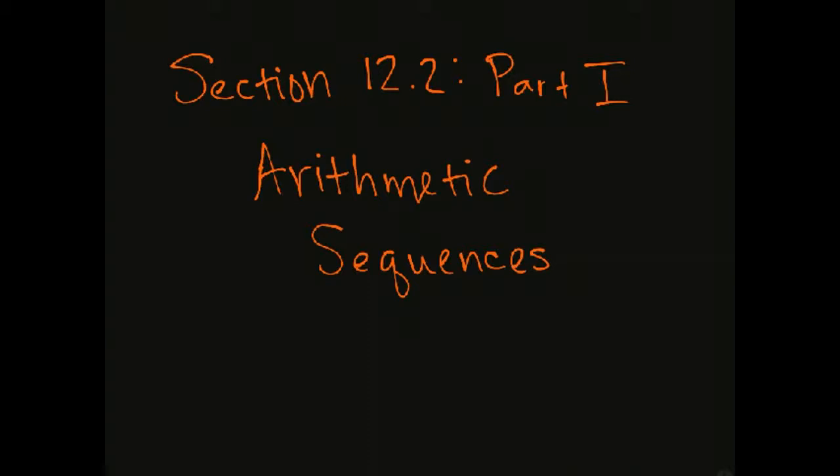Arithmetic sequences are one special type of sequence which has a special rule, in that each term is just a constant, some number, added to the term before it. And that constant is the same, that's why we call it constant, every time we add. We call this the common difference. So we have d is the common difference between all the terms in the sequence.